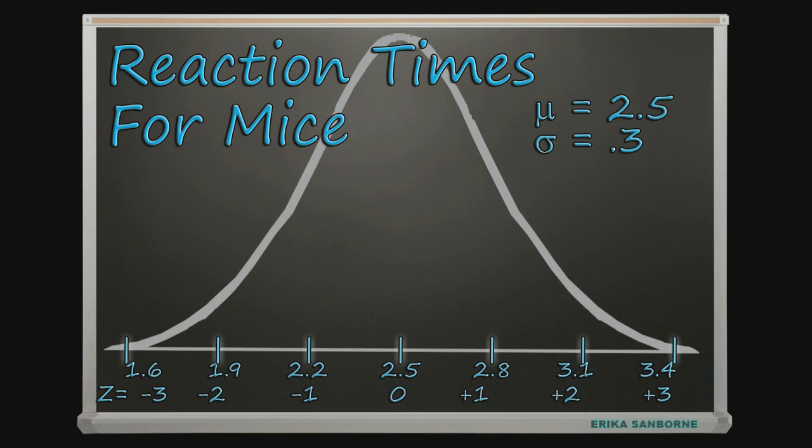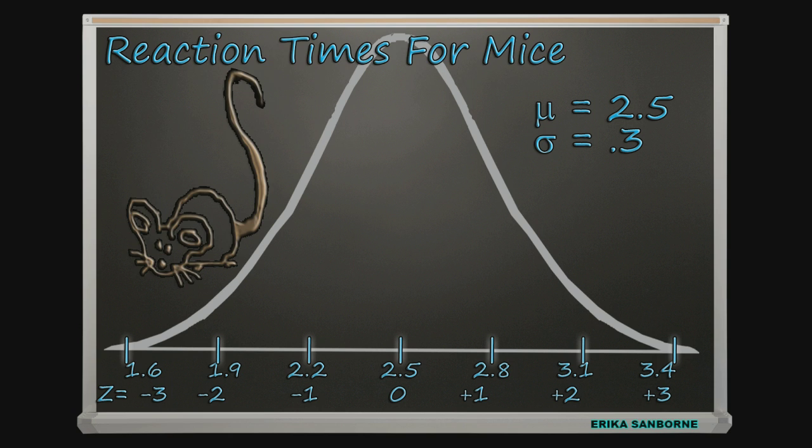Let's go with reaction times for mice. Here are those characteristics for the known population of reaction times for mice on some measure: mean of 2.5 and standard deviation 0.3. And here is my mouse. His name is Seymour, and don't judge him, he didn't name himself. In fact, it turns out that he's pretty good on this reaction time measure. His reaction time is 2.08 seconds, and that's awesome because the average is 2.5 seconds.